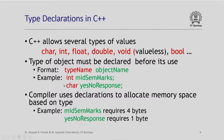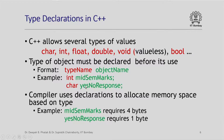Why are type declarations important? Because the compiler is going to use these declarations to allocate an appropriate amount of memory space based on the type to store the values associated with this variable. For example, if 'midsem_marks' is of type integer, the compiler is going to allocate 4 bytes to store the value of that integer. Whereas if 'yes_no_response' is of type character, the compiler is going to allocate 1 byte. So these type declarations serve a purpose much more than readability — they are actually used by the compiler to do memory space allocation for different variables.